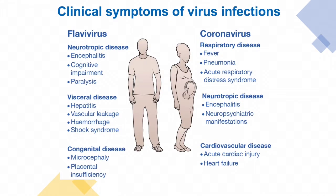Some of the clinical symptoms of these viruses are quite nasty and life-threatening. Flaviviruses can cause a host of different clinical manifestations including neurotropic complications. Severe disease can lead to hepatitis, hemorrhagic fever, and shock syndrome in infected individuals, and coronaviruses cause respiratory distress and in acute cases cause pneumonia and ultimately death.